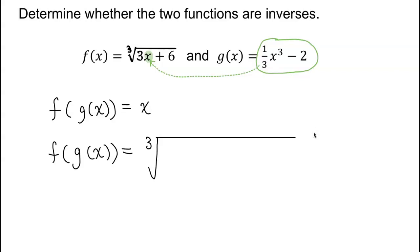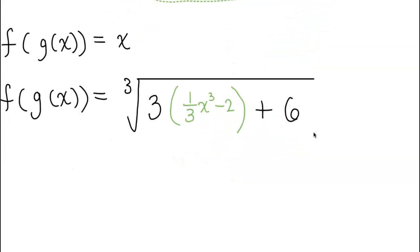But instead of x we're going to write down one-third x cubed minus 2 and a parenthesis, and then after that we still need to write down plus 6. All done with composition, let's go ahead and simplify this.